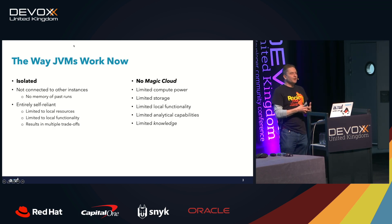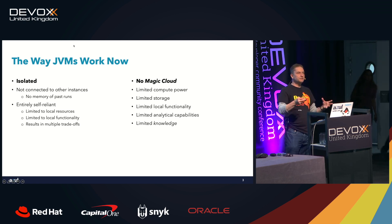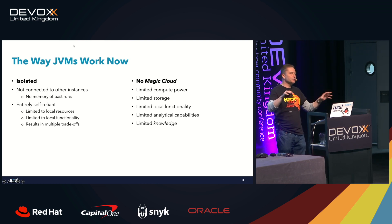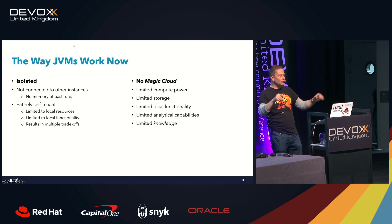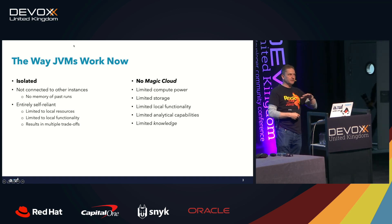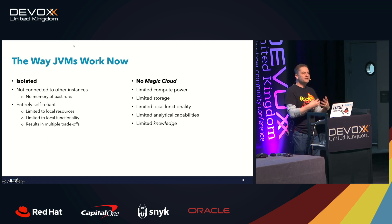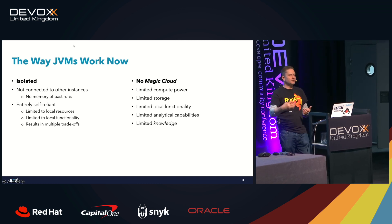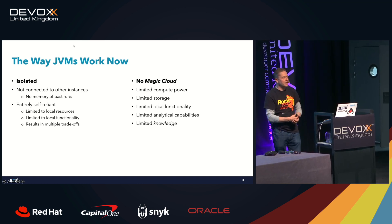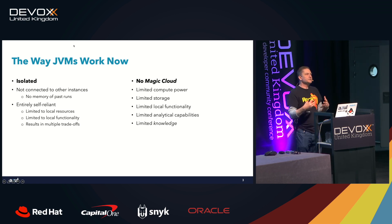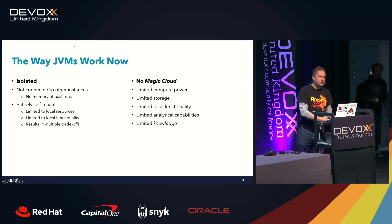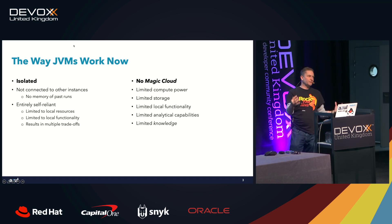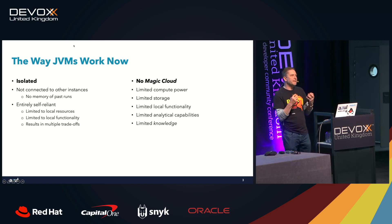The way JVMs work at the moment is that they are isolated — they're not connected to other instances from the JVM level. Sure, you can have microservices connecting via RESTful web services, but from the JVM's perspective, they don't communicate. There's also no memory of what's happened in the past. When you start up an application, it goes through the same process of analysis it did previously, every time. The JVM is also entirely self-reliant — it has its local resources, and it's limited to those resources, especially if you're running in a container. There's no concept of this magic cloud which we rely on for applications as we move into that sort of architecture.